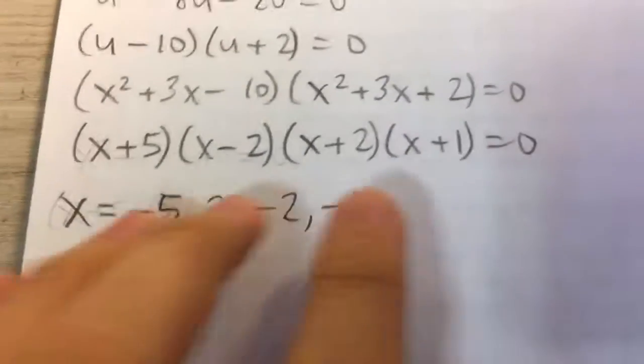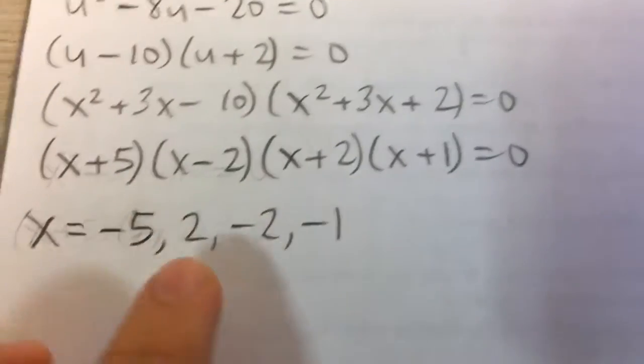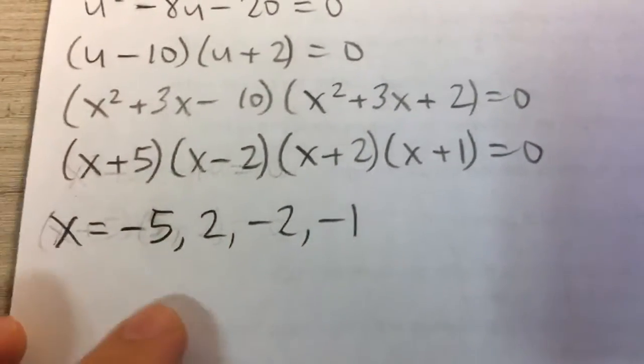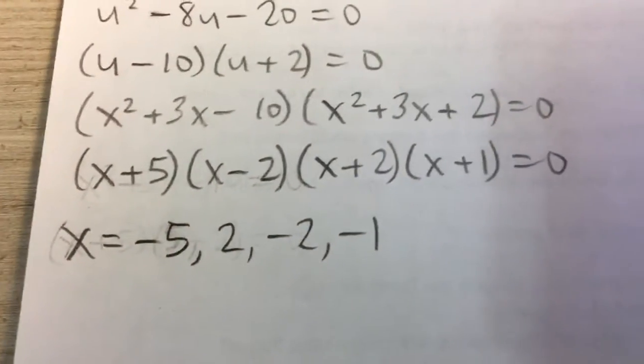This right part factors into (x+2)(x+1). Now if we have all four of these binomials, we can set them equal to 0 and solve for x. We'll get x = -5, 2, -2, and -1.